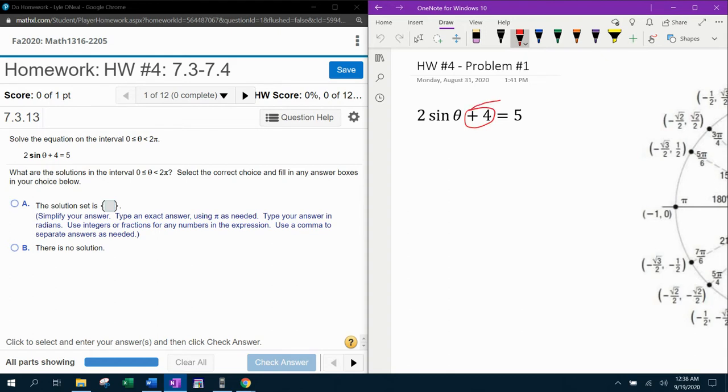First step is to bring the plus four to the other side, which will turn that into minus four. And that'll give us two sine theta equals one.